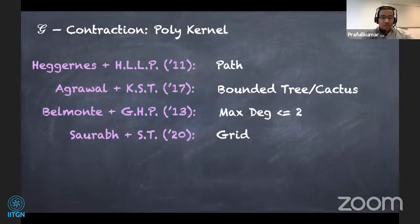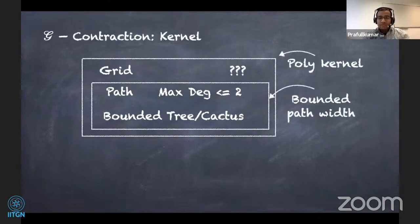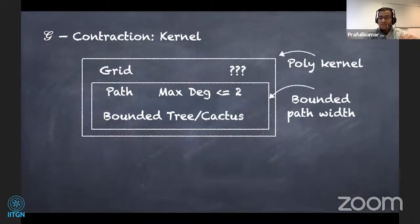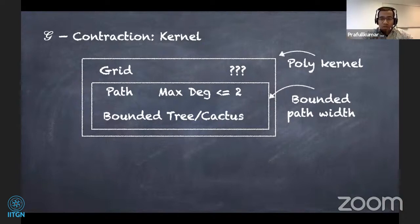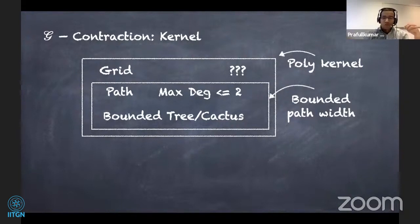So polynomial kernels don't go very well with edge contraction problems, to the best of my knowledge. Looking at these graph classes, all of those have a polynomial kernel, but apart from grid, all these graph classes have bounded pathwidth. At some point we were thinking whether there would be a dichotomy result saying only these kinds of graph classes have a polynomial kernel — that's why the polynomial kernel for grid seems to be a surprising result.